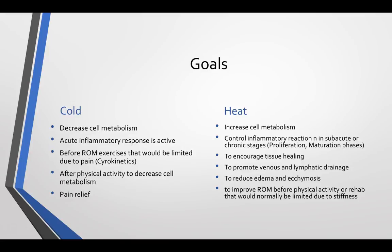For heat, we're going to increase cell metabolism. Heat is best for controlling inflammation in the subacute or chronic stages — specifically usually the proliferation and maturation phases. Goals on the heat side include encouraging tissue healing and promoting venous and lymphatic drainage. It actually helps reduce edema and ecchymosis once we're past the acute inflammatory response phase. If we use heat too early, we would actually increase inflammation and swelling. But at the appropriate time, it can promote venous and lymphatic drainage to help reduce edema. It can also be used to improve range of motion before physical activity or rehabilitation when limited by stiffness or soreness.